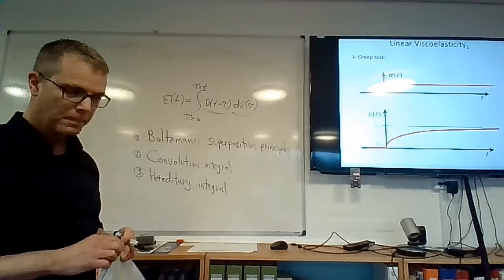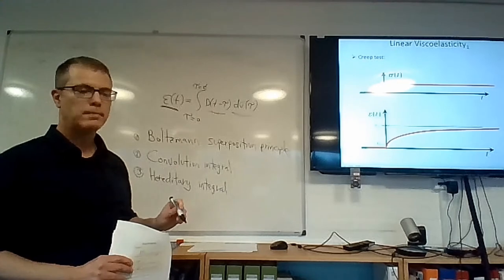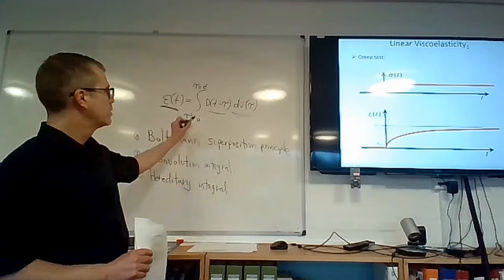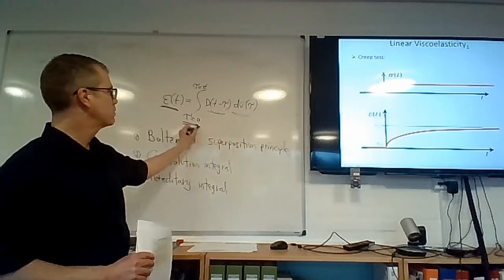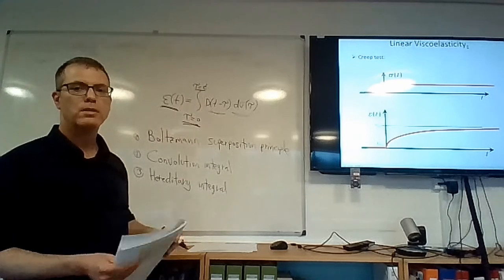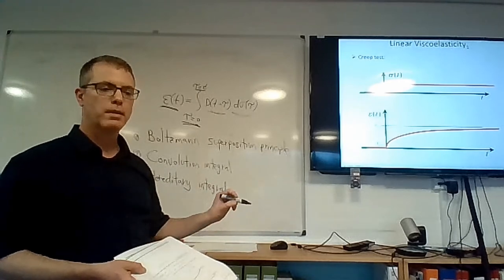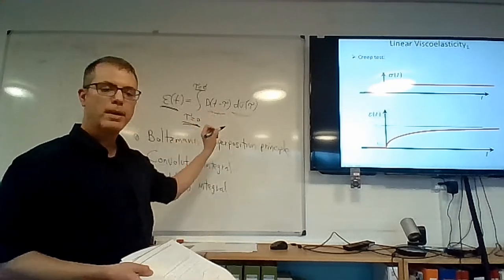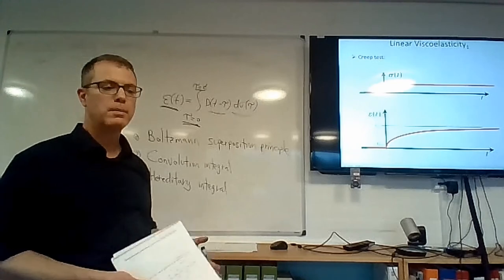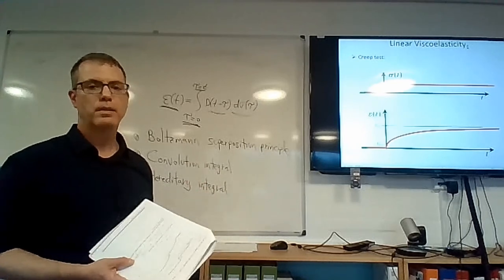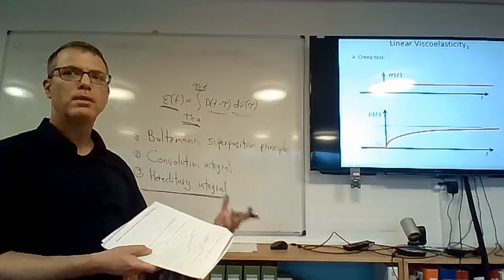What is interesting to point out — and this is in relation to computational power — is that this integral basically says that to find the strain at the current time t, one has to sum up the effects from the day the material was born until now. Every stress application ever incurred by the material has to be included. Imagine a road where hundreds of thousands of cars have traveled — to know the strain level at a location now, you would need to know how many cars passed and the load level of each car. This is the challenge in the pavement business with viscoelastic materials. This is why it is called the hereditary integral — as if you inherit things that happened in the past and cannot forget them.